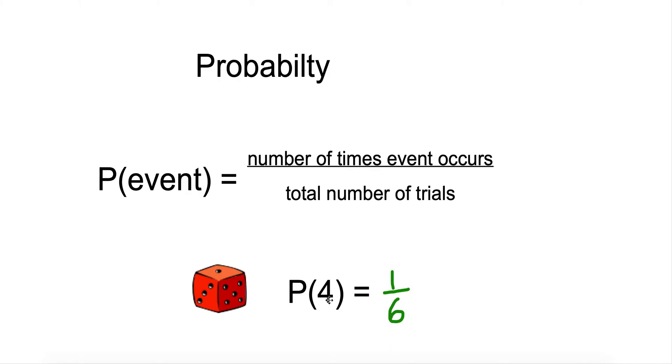Our probability of getting a four is one out of six. This can also be expressed as a decimal or percentage. As a decimal, we take one divided by six, and you get a repeating decimal, .16 with the six repeating, or we can round it to .16. To convert that to a percentage, we take the decimal times 100, so we get about 16.7%.